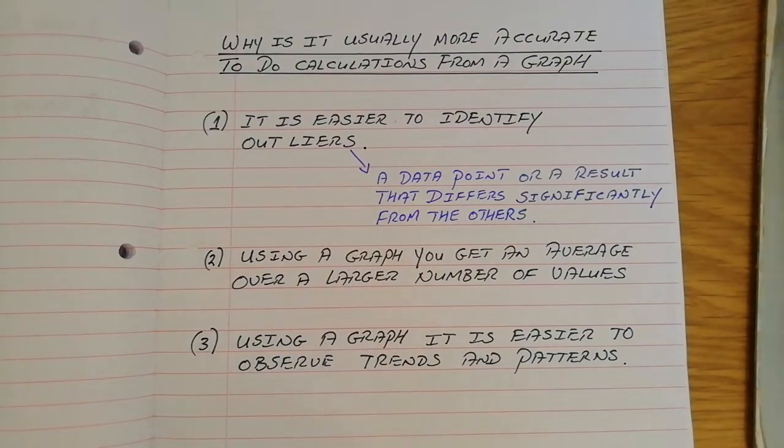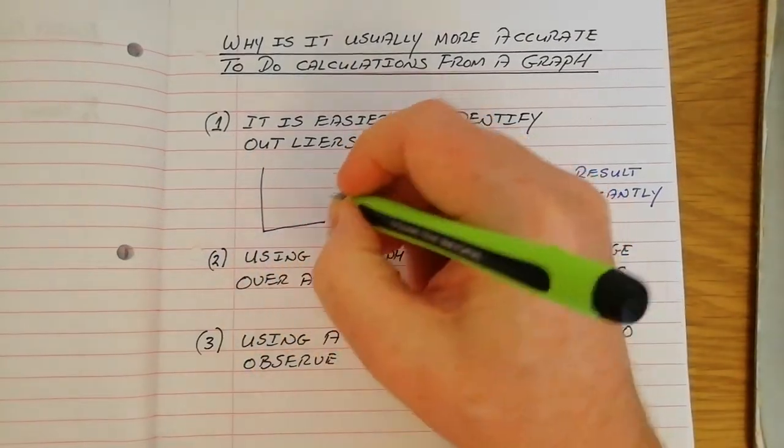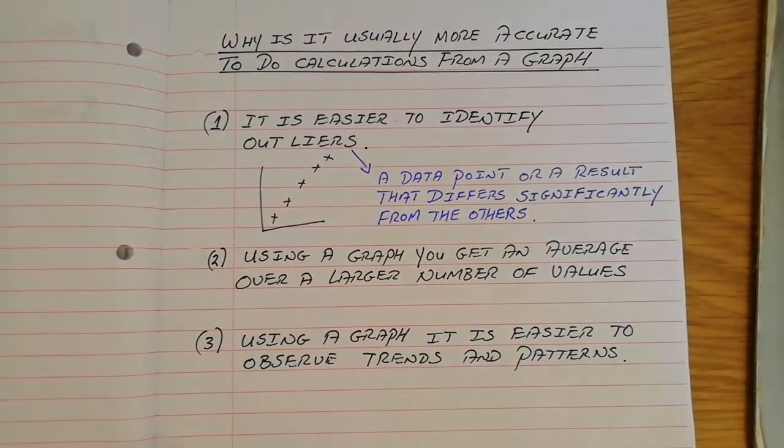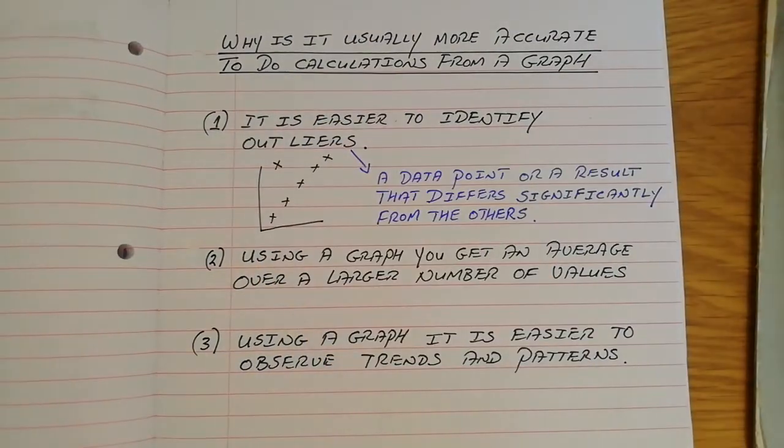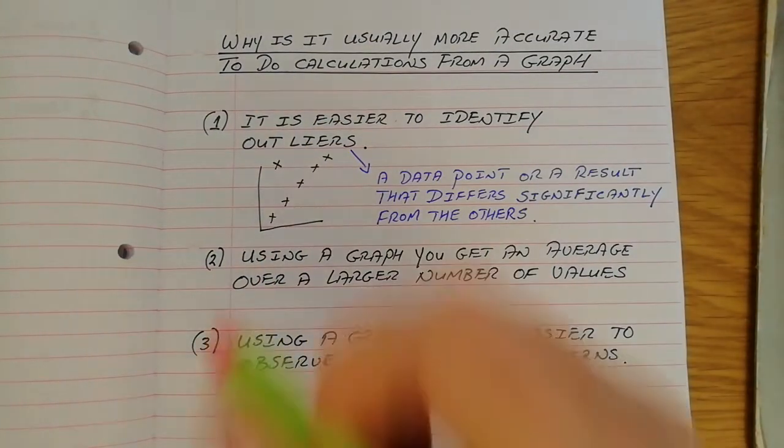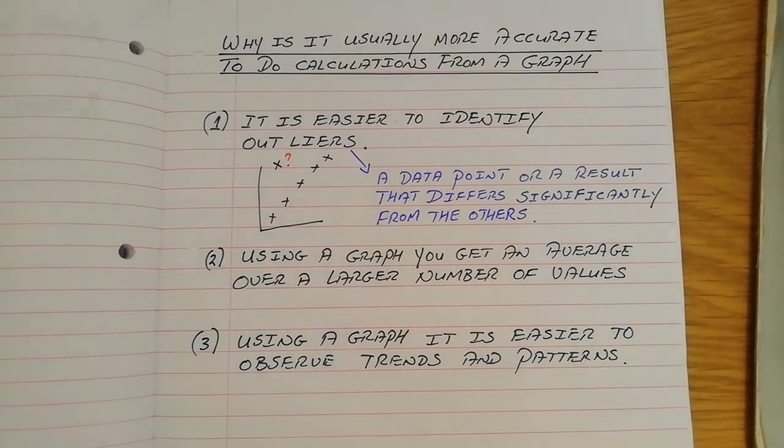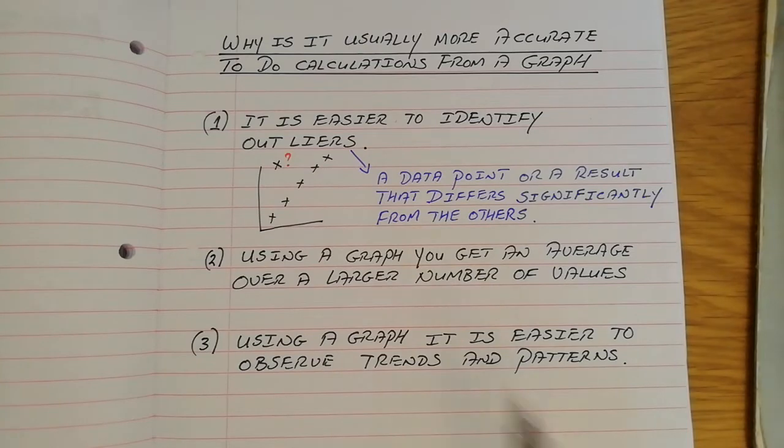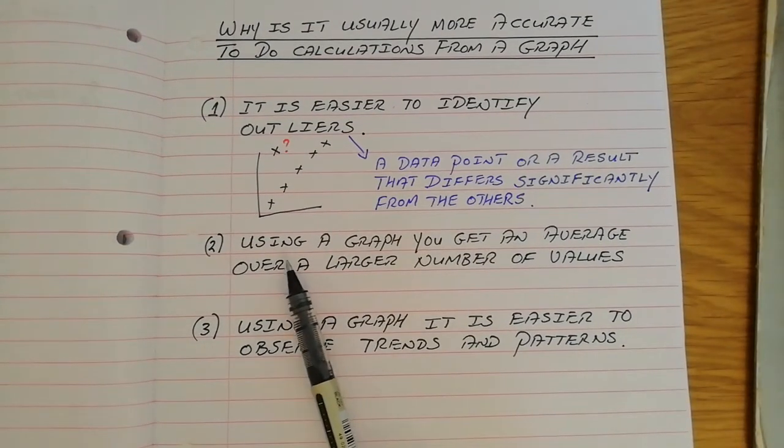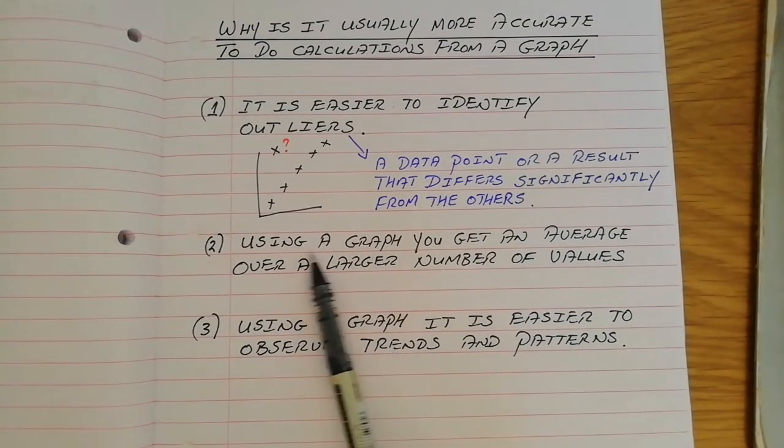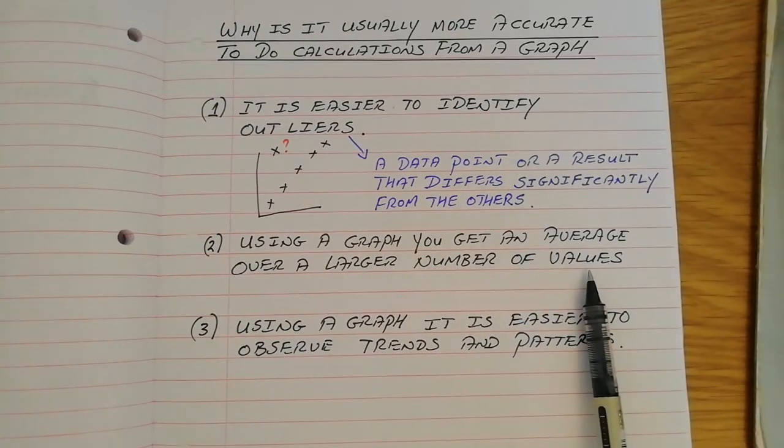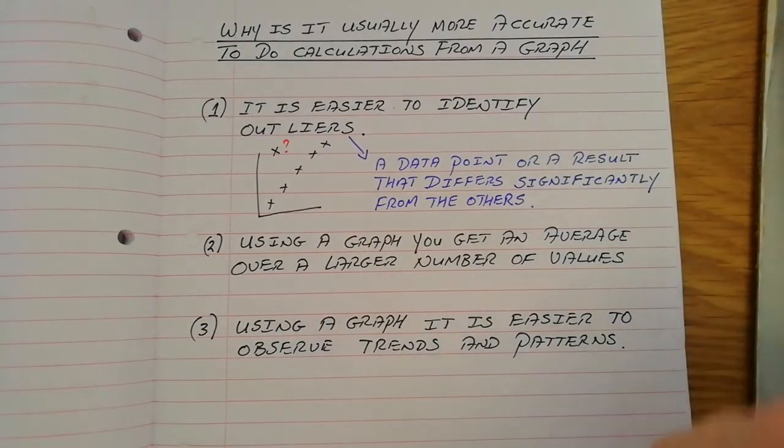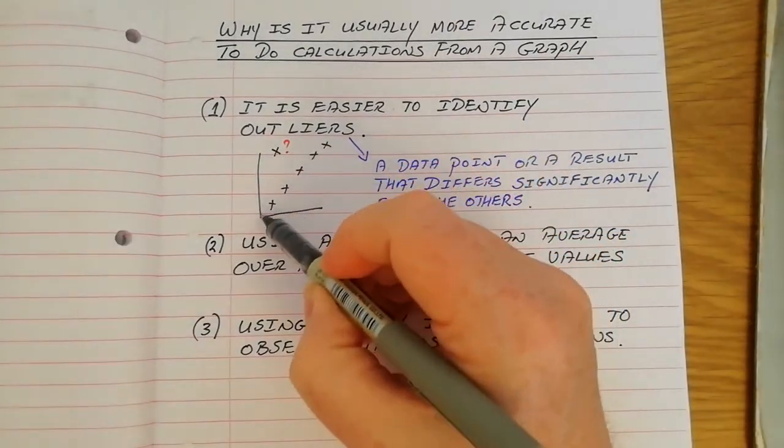There's some error or some mistake has been made, and those points don't fit into a trend. I mean, if you had something like this, if you had a graph like this, and no matter what's on the axis, and your points are there, nice straight line, and suddenly you get a point way up there, well, you would have to question, is that the reality of the situation? Is that really telling you something, or was an error made? That point would be known as an outlier. Second thing for advantage of graphs, a graph will allow you to get an average over a larger number of values.